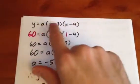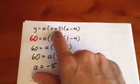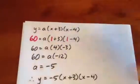Any parabola that has roots at negative 3 and positive 4 will be of the form A times (x plus 3) times (x minus 4).